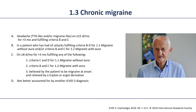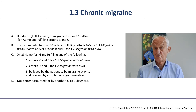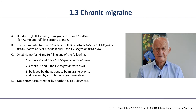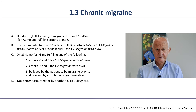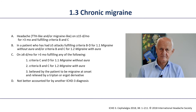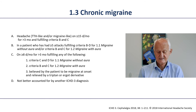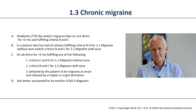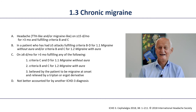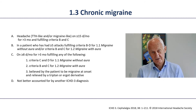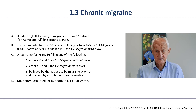Chronic migraine is a relatively new entity, first included in the classification in 2004, with criteria later modified. It has proven to be a very important entity representing the severest aspect of migraine — these patients suffer the most and are often completely disabled. It is defined as headache occurring on 15 or more days per month, out of which at least eight days must be migraine — either migraine without aura, migraine with aura, or a combination.